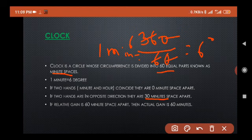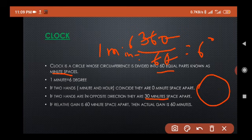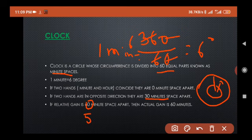If relative gain is 60 minute space apart, then actual gain is 55 minute space apart. Because minute hand is moving, along with that hour hand is also moving, but very slowly. If in a clock, suppose minute hand is completing one circle, that time hour hand is completing 5 minutes space apart. That is why if relative gain is 55 minute space apart, then actual gain is 60 minutes.